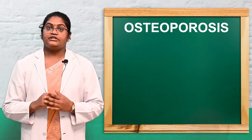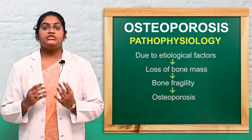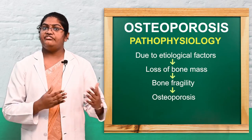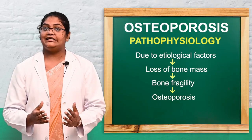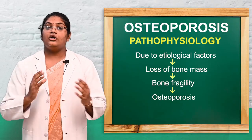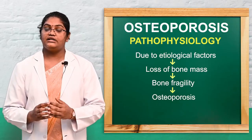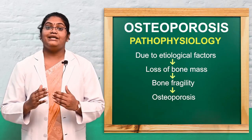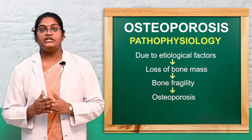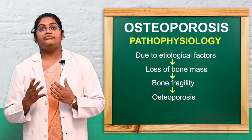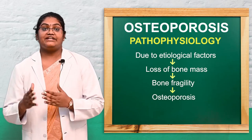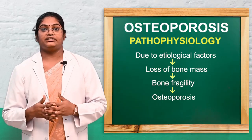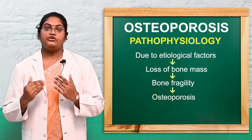Next we discuss pathophysiology. All the etiological factors lead to reduced bone mass or decreased bone mass, which leads to fragility of bone. Bone fragility then leads to a high chance of fracture — that is osteoporosis.